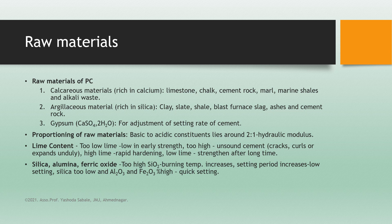Gypsum is added to the cement clinker during treatment for the adjustment of the setting rate of the cement. There is also proportioning of raw materials necessary for the characteristics of Portland cement. The basic to acidic constituents ratio lies around 2 to 1, known as the hydraulic modulus.